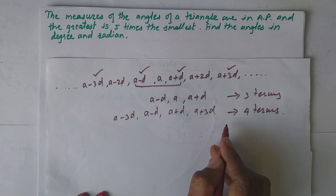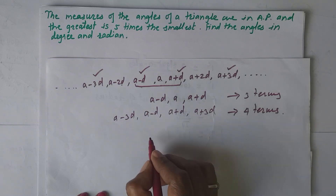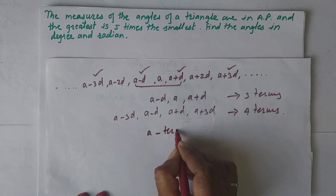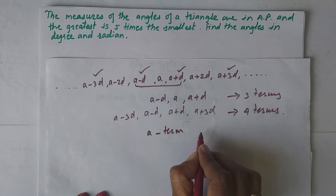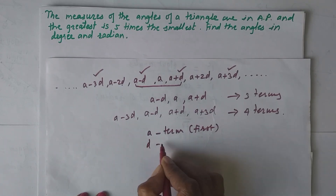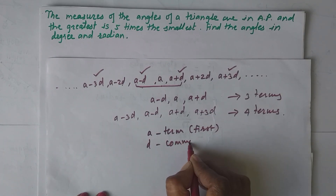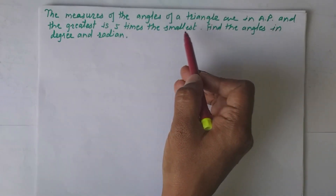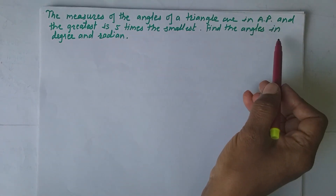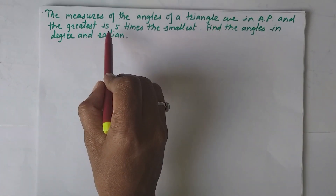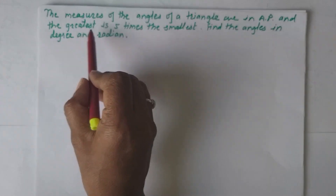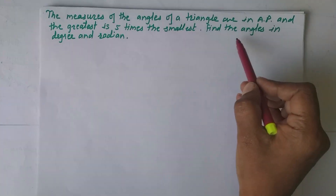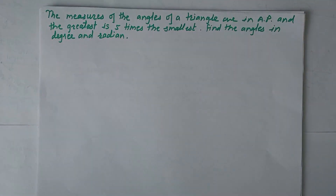If you know these properties of arithmetic progression, it is very easy to solve such problems. Now let's see the problem: the measures of angles of a triangle are in AP and the greatest is five times the smallest. Find the angles in degree and radian.